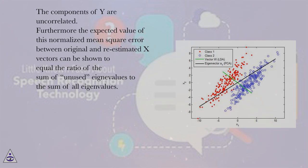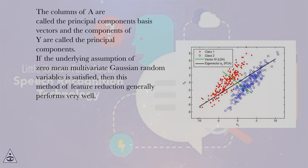The components of Y are uncorrelated. Furthermore, the expected value of the normalized mean square error between original and re-estimated X vectors can be shown to equal the ratio of the sum of unused eigenvalues to the sum of all eigenvalues. The columns of A are called the principal components basis vectors and the components of Y are called the principal components.